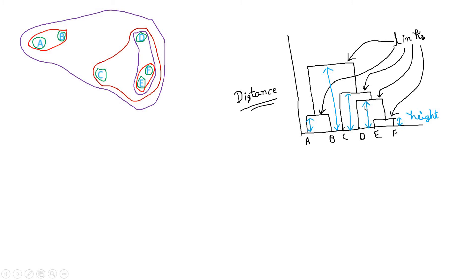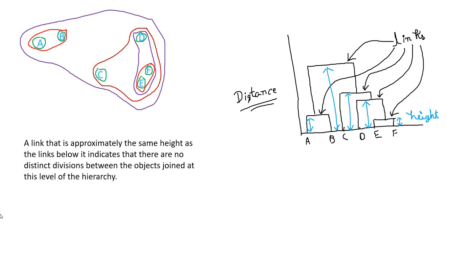If the height between two links is very small, the dissimilarity between those two clusters is very small. For example, consider cluster C and cluster DEF — their height gap is very small, and from the data set you can clearly see that C and DEF are not very much separated. So if the height difference is small, we conclude there is less difference between those two clusters.